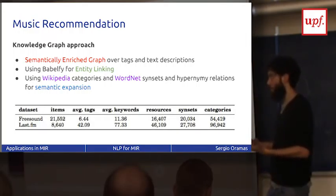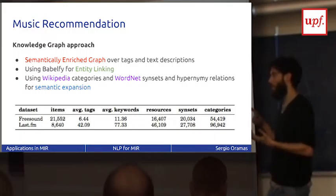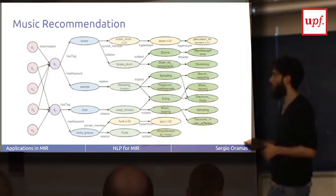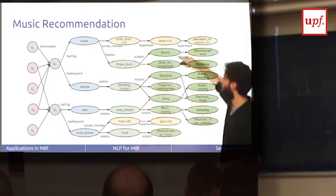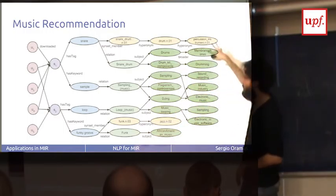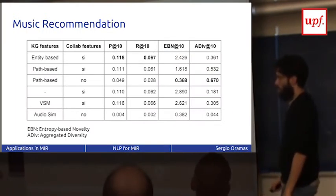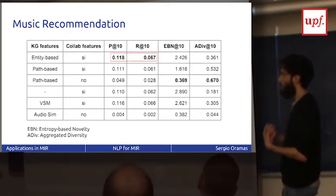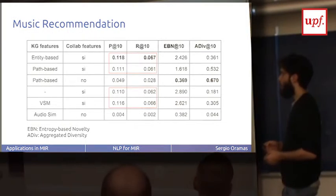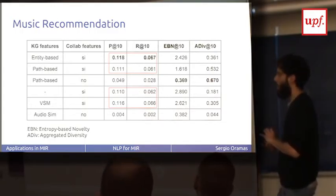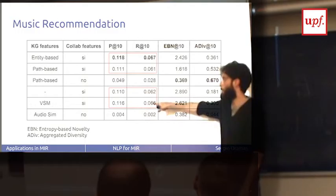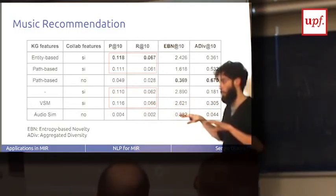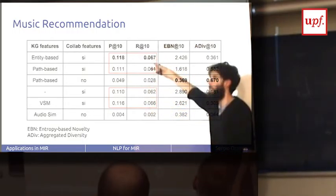We did the experiment on two different datasets: one for sound recommendation from Freesound, using descriptions of sounds and tags; and another for music recommendation using descriptions extracted from Songfacts and information tags from Last.fm. We applied entity linking to the descriptions of the sounds, built semantically enriched graphs, and embedded them with entity-based embedding and path-based embedding. For every sound, we have the entities and information from Wikipedia and Wikidata, so this subgraph describes the sound.